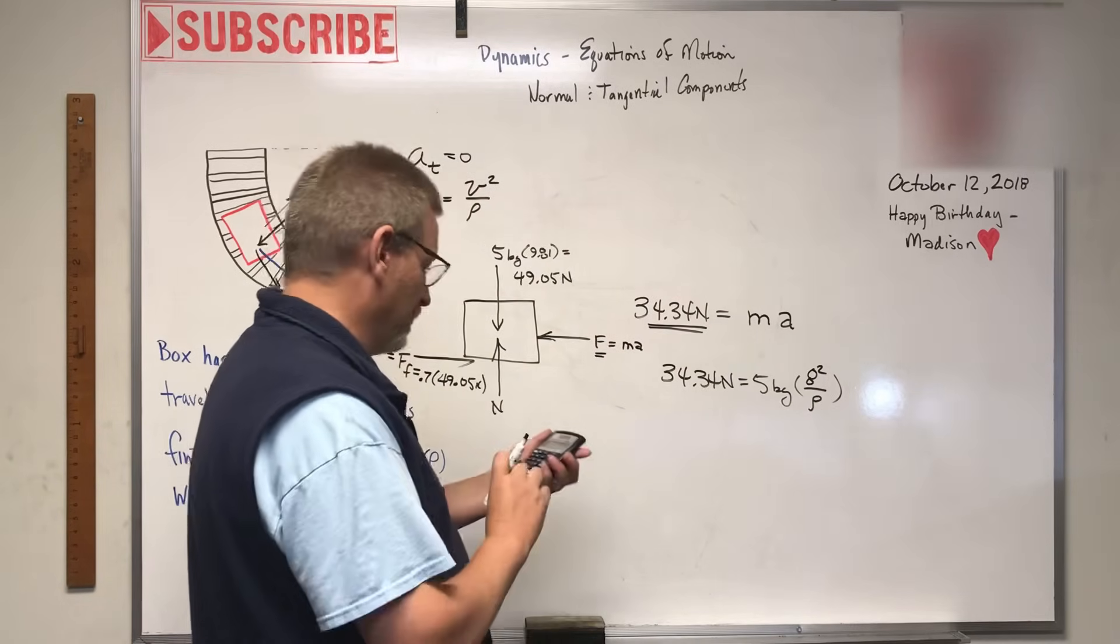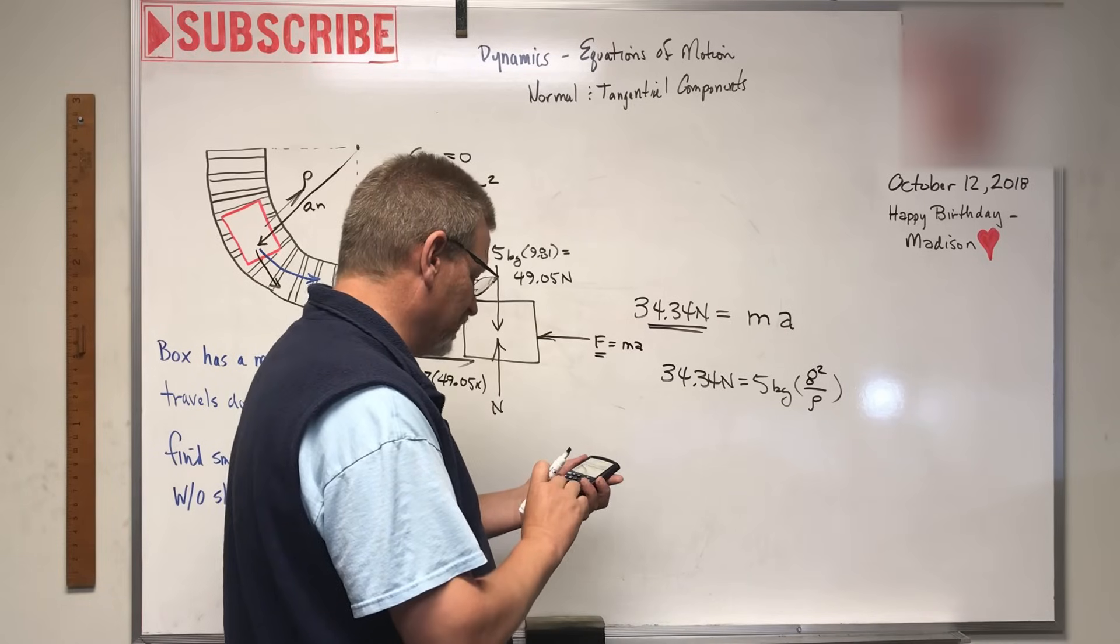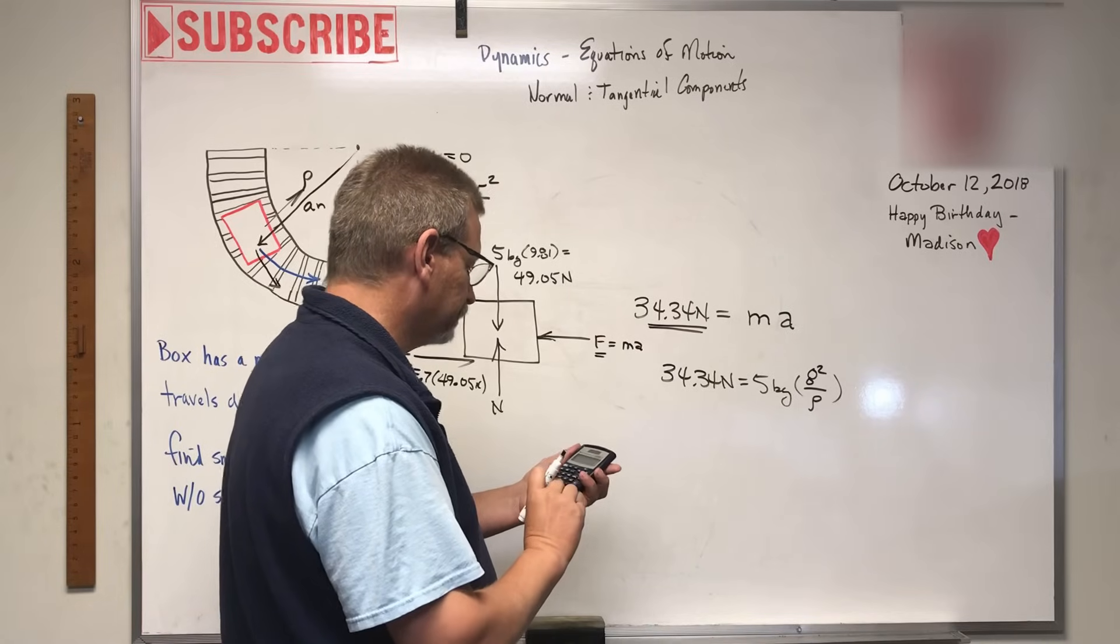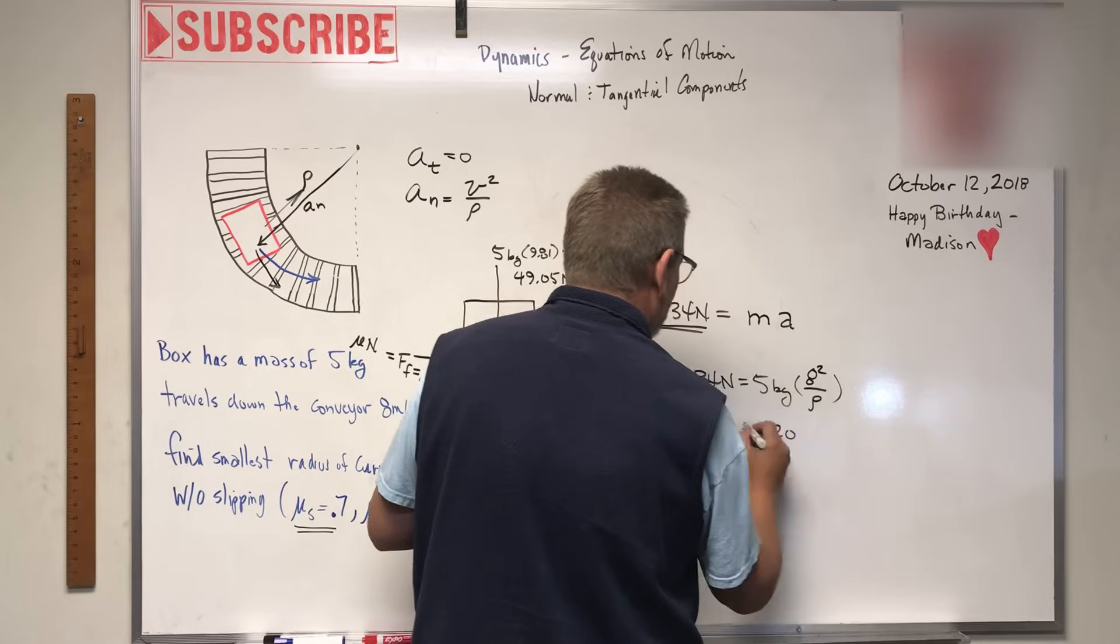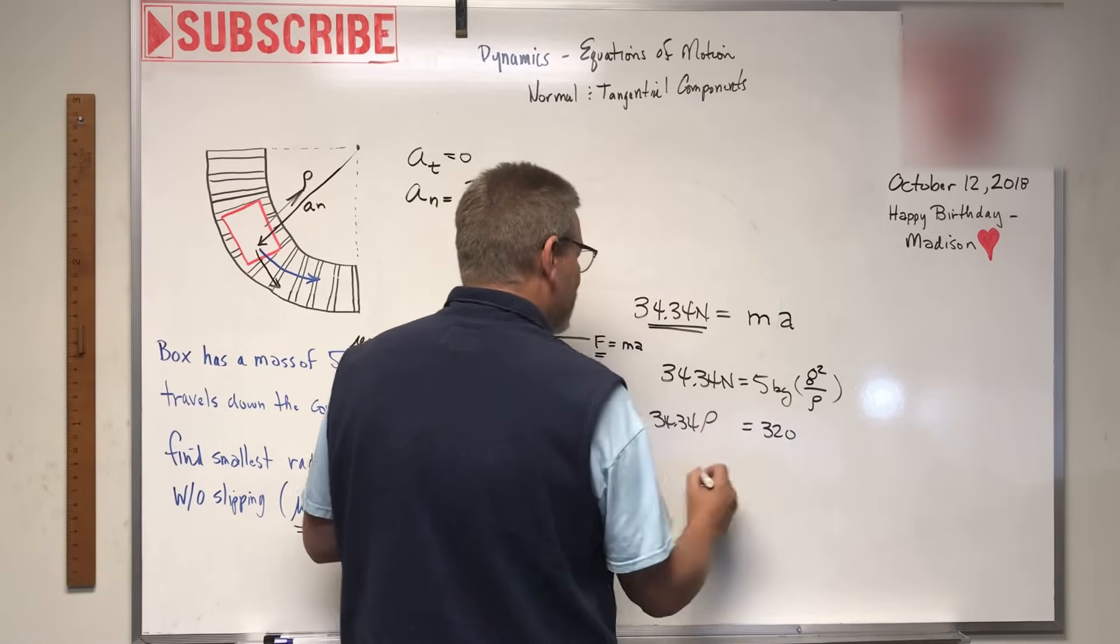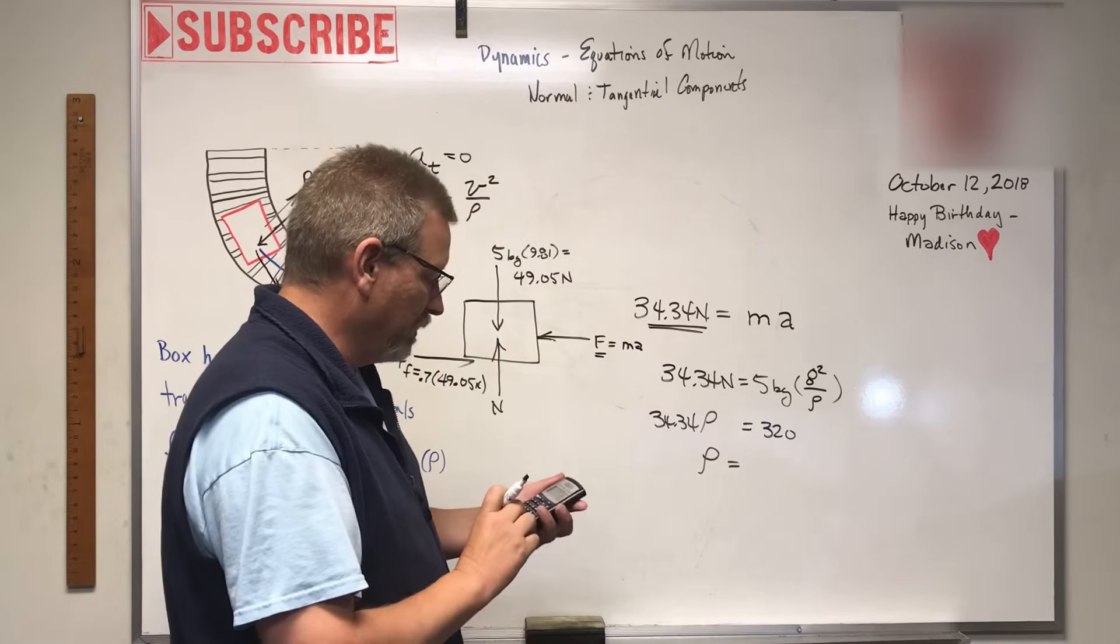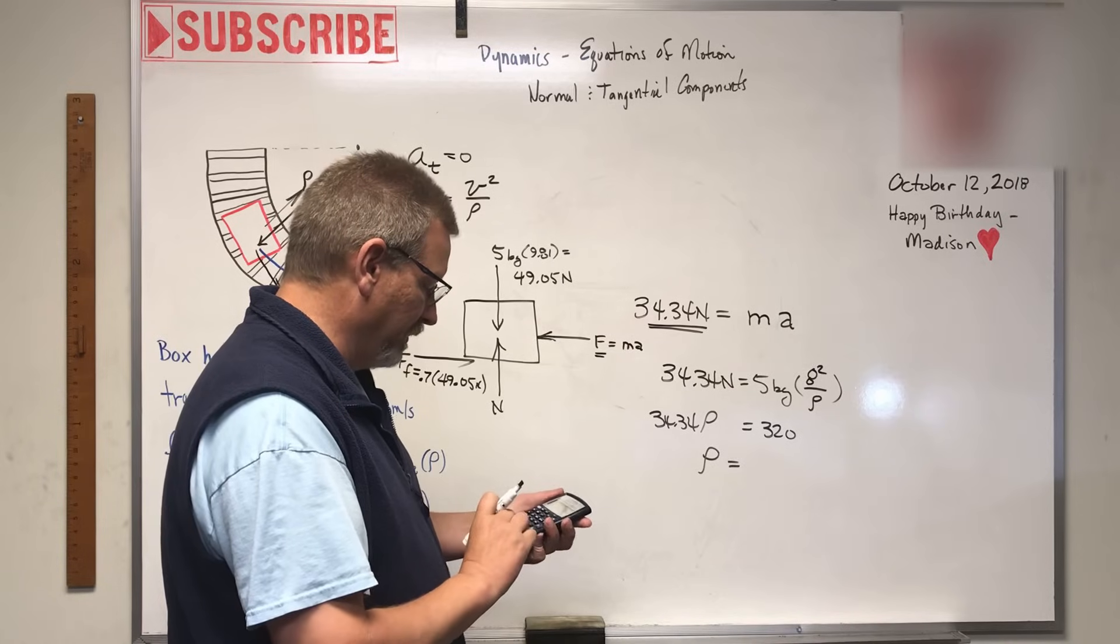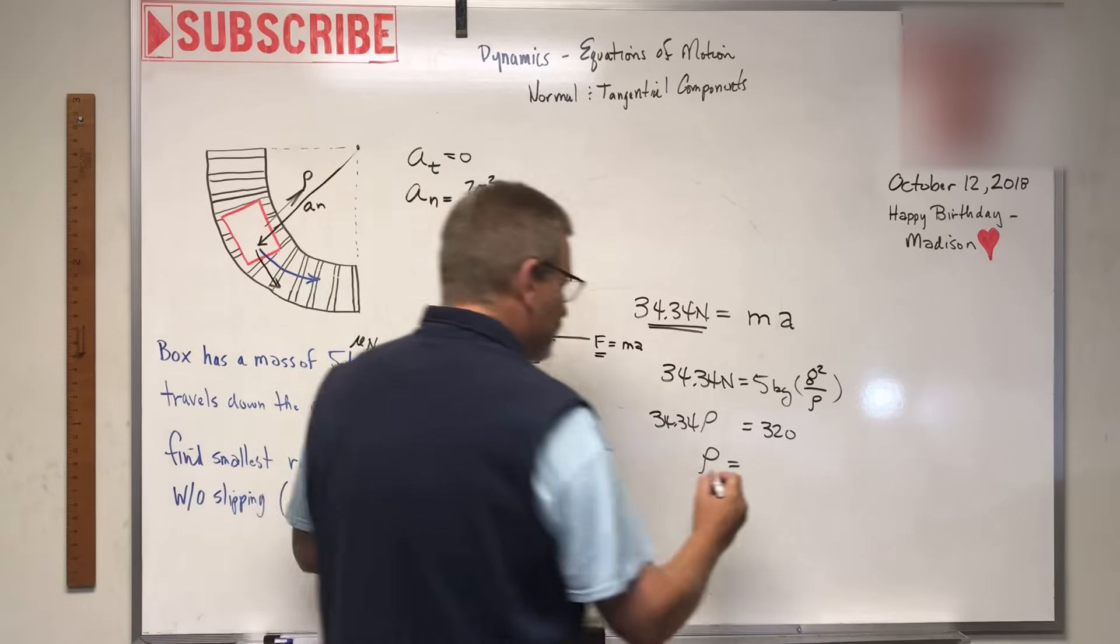Five times 8 squared - that's 64 - equals 320. So 320 equals 34.34ρ, and so ρ equals 320 divided by 34.34, which equals 9.32 meters.